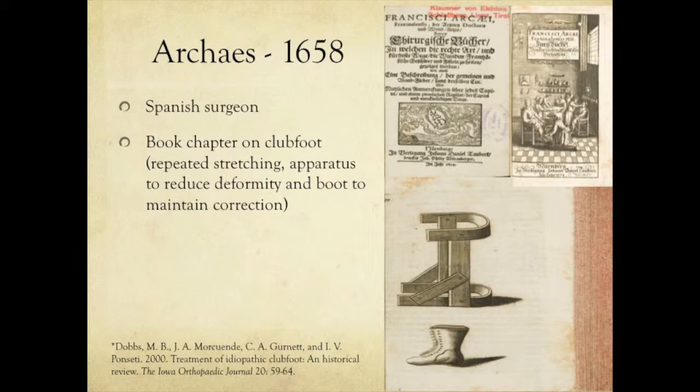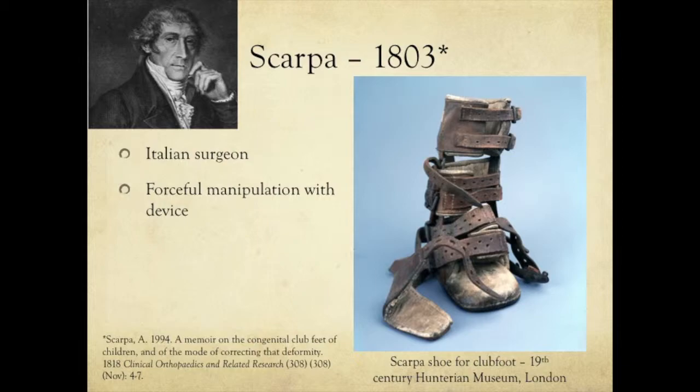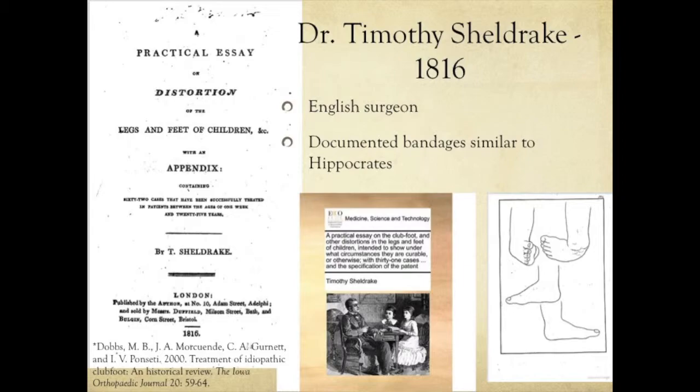The next documentation of clubfoot comes from Scarpa, an Italian surgeon. In 1803, he utilized a device using forceful manipulation. This is actually an amazing picture from the Hunterian Museum in London. He would tighten the belts, and that would be how he achieved correction of the foot. Next was Dr. Timothy Sheldrake, an English surgeon who in 1816 documented the utilization of bandages to treat clubfoot — very similar to what Hippocrates had described.